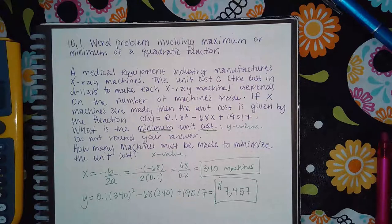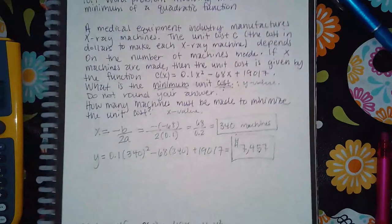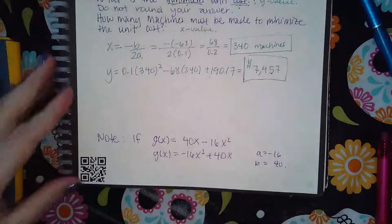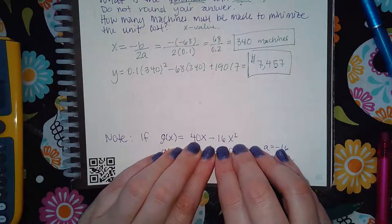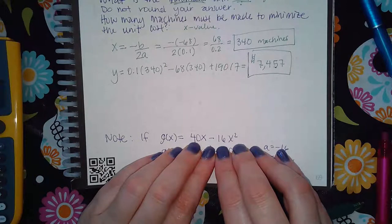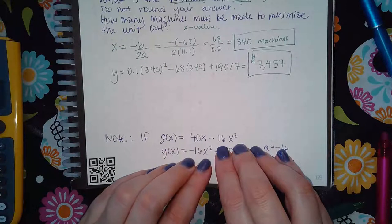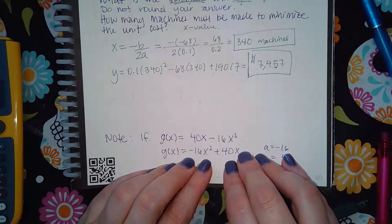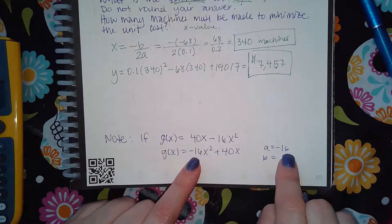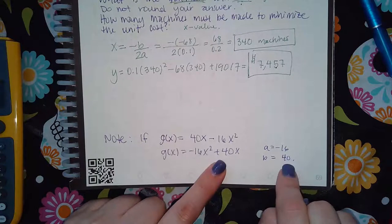But that is it. That's all we needed to do. I did want to make one quick note that if your function does look a little bit different, make sure that you rearrange it so the squared term is first. Because a is what is in front of x², and b is what's in front of x.